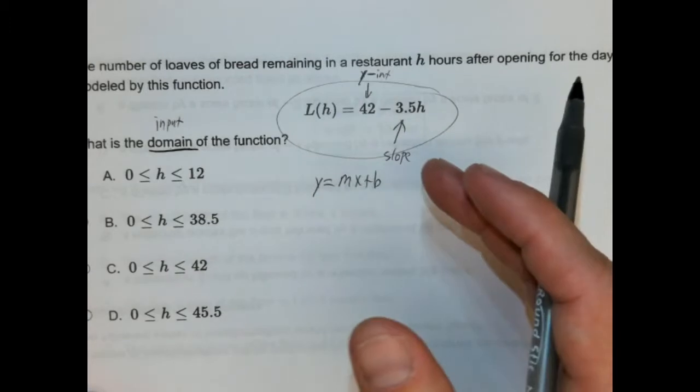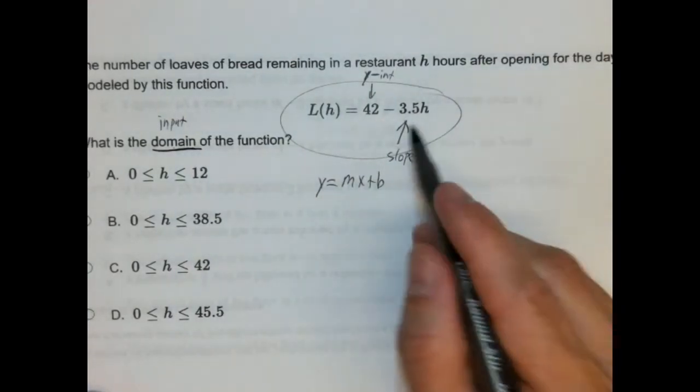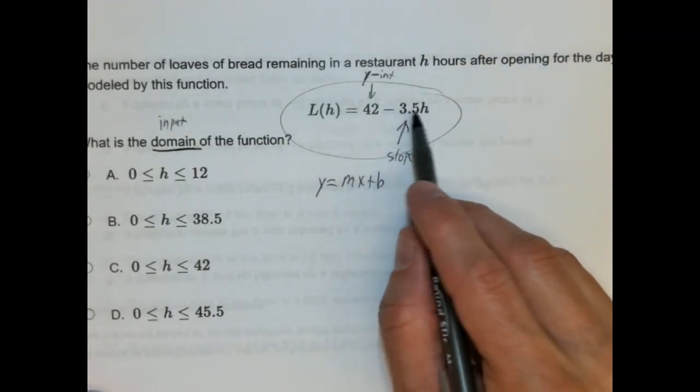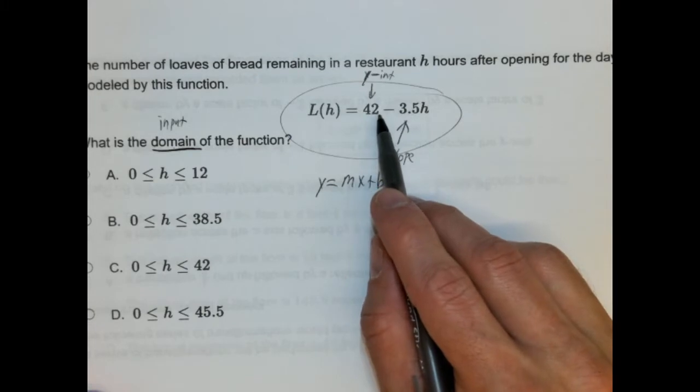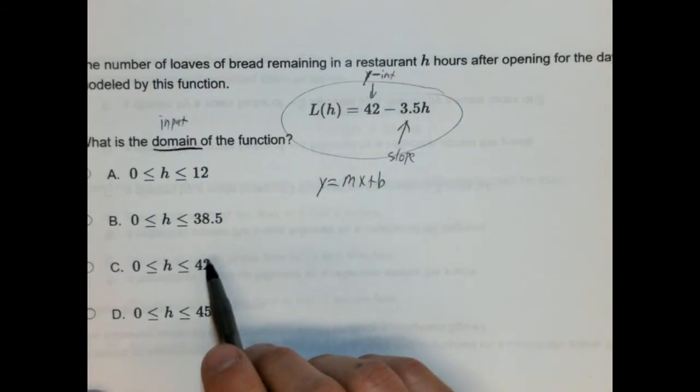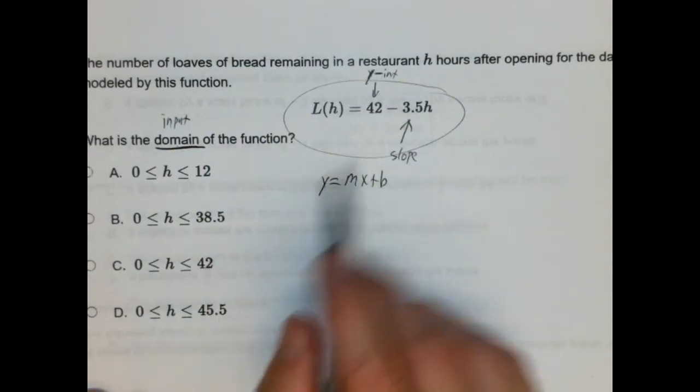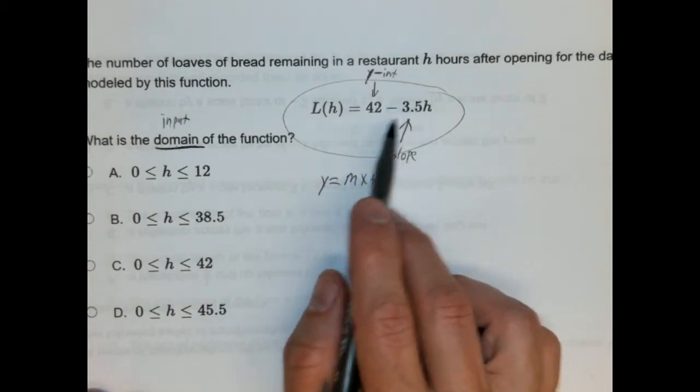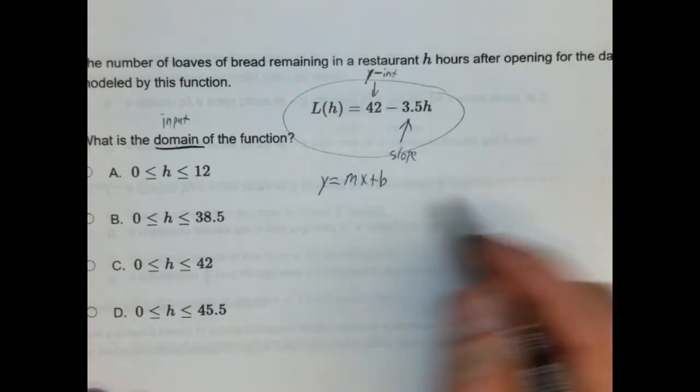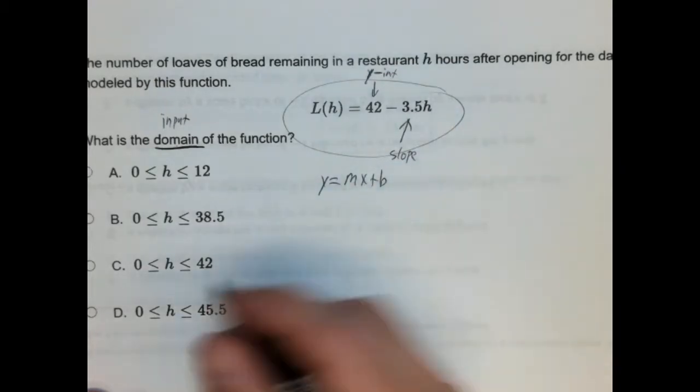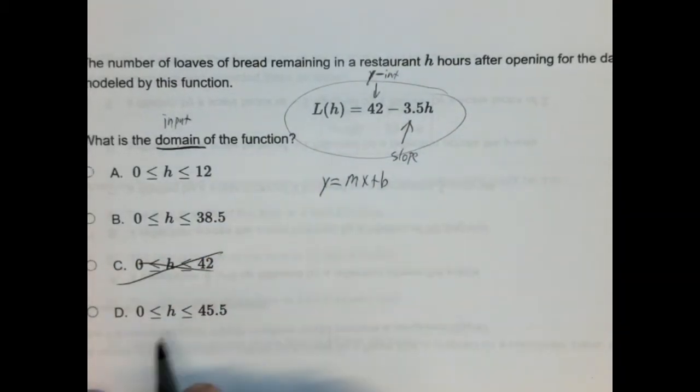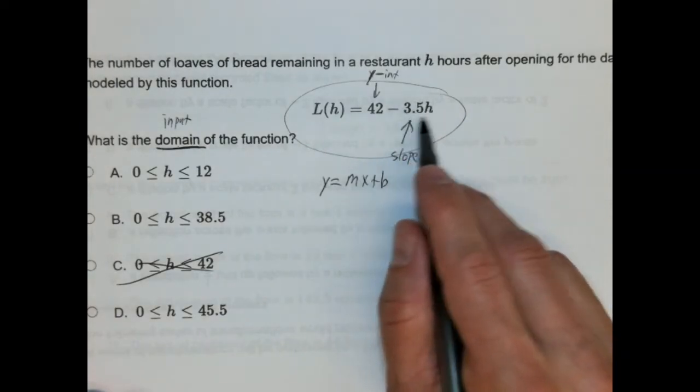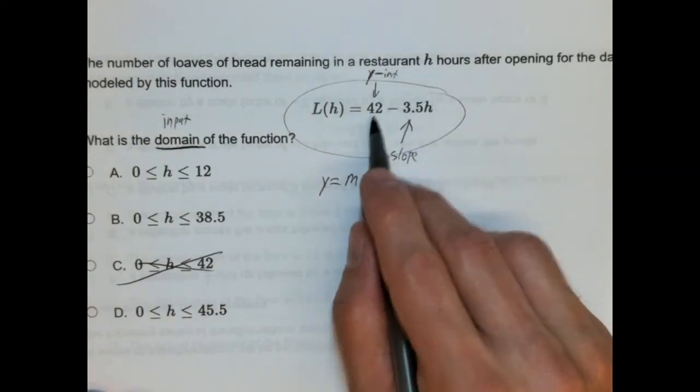So it's very tempting to start and say, oh well we're going to zero to 42, right? That's our domain. Well no it's not. Domain is what the values of H can be in order for this to work. Now we know we can't have negative loaves of bread so there are some restrictions to our domain. The lowest H value obviously can be zero. We can start at zero hours. So that doesn't really help us. But we need to figure out what our maximum H value can be. We know the restriction is we can't have negative loaves.